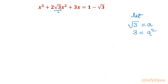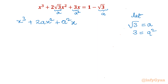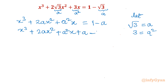So here I will write a, here I will write a², and here I will write a. That gives us x³ + 2ax² + a²x = 1 − a. Taking all terms to the left: x³ + 2ax² + a²x + a − 1 = 0. This is a cubic equation in x.